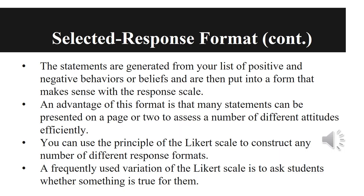The statements used with the five-point scale are generated from your list of positive and negative behaviors or beliefs and are put in a form that makes sense for the response scale. An advantage of this format is that many statements can be presented on a page or two to assess a number of different attitudes efficiently and quickly. For younger students, the five-point scale is usually cut down to three responses — agree, unsure, disagree — or even two, such as agree or disagree, yes or no, or true or not true. Many self-report instruments use a Likert-type scale that asks students to indicate how often they have engaged in specific behaviors or had particular thoughts.